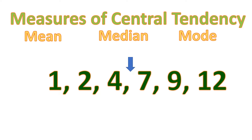So by looking at these numbers, you can estimate the value of the center — it's around higher than 4 but less than 7. By just observing the data, you can estimate, but you can't get the closest or exact value of the center. And that's the reason why you will compute mean, median, or mode.